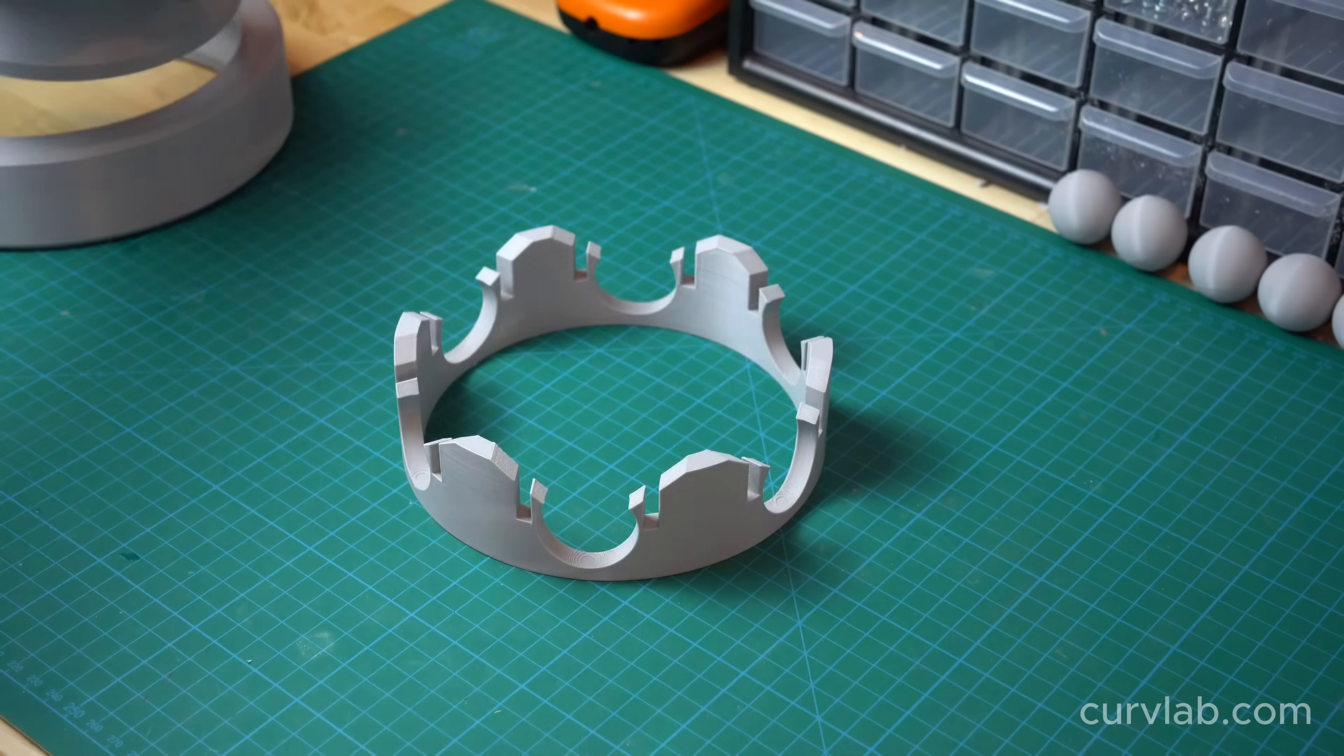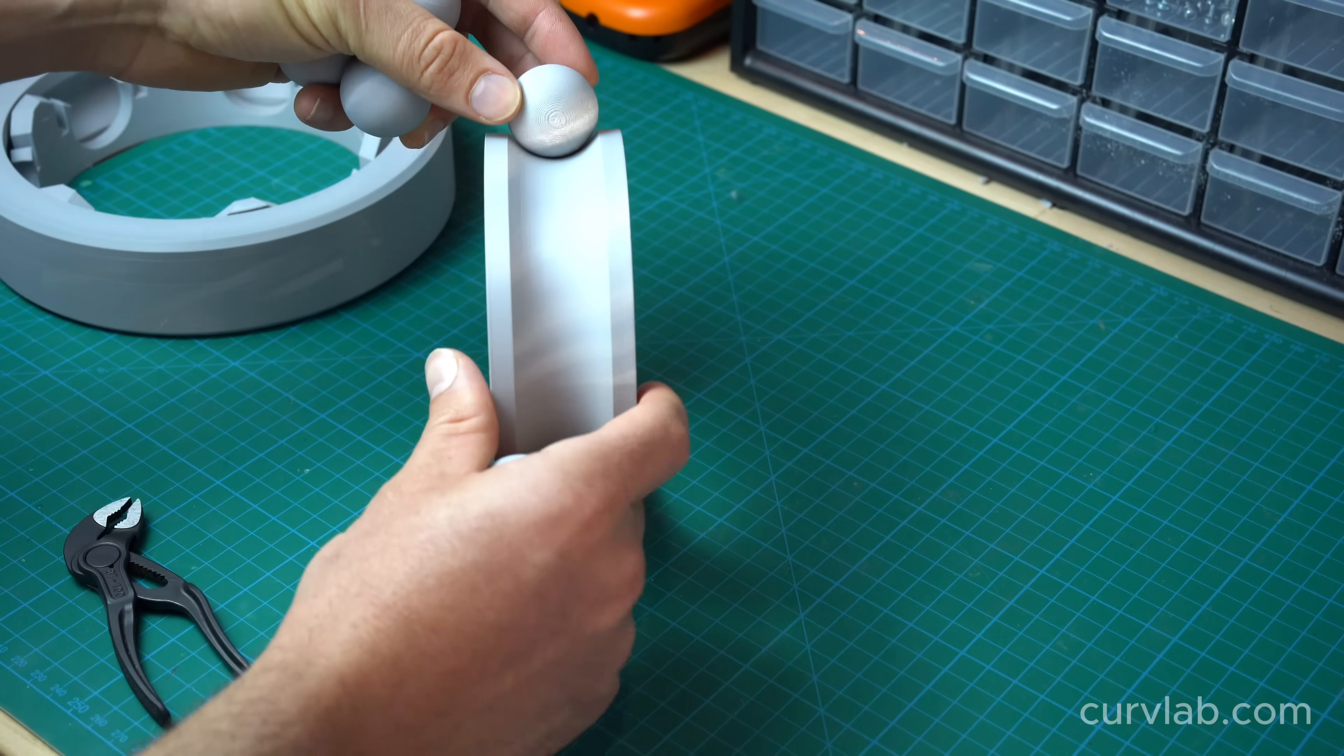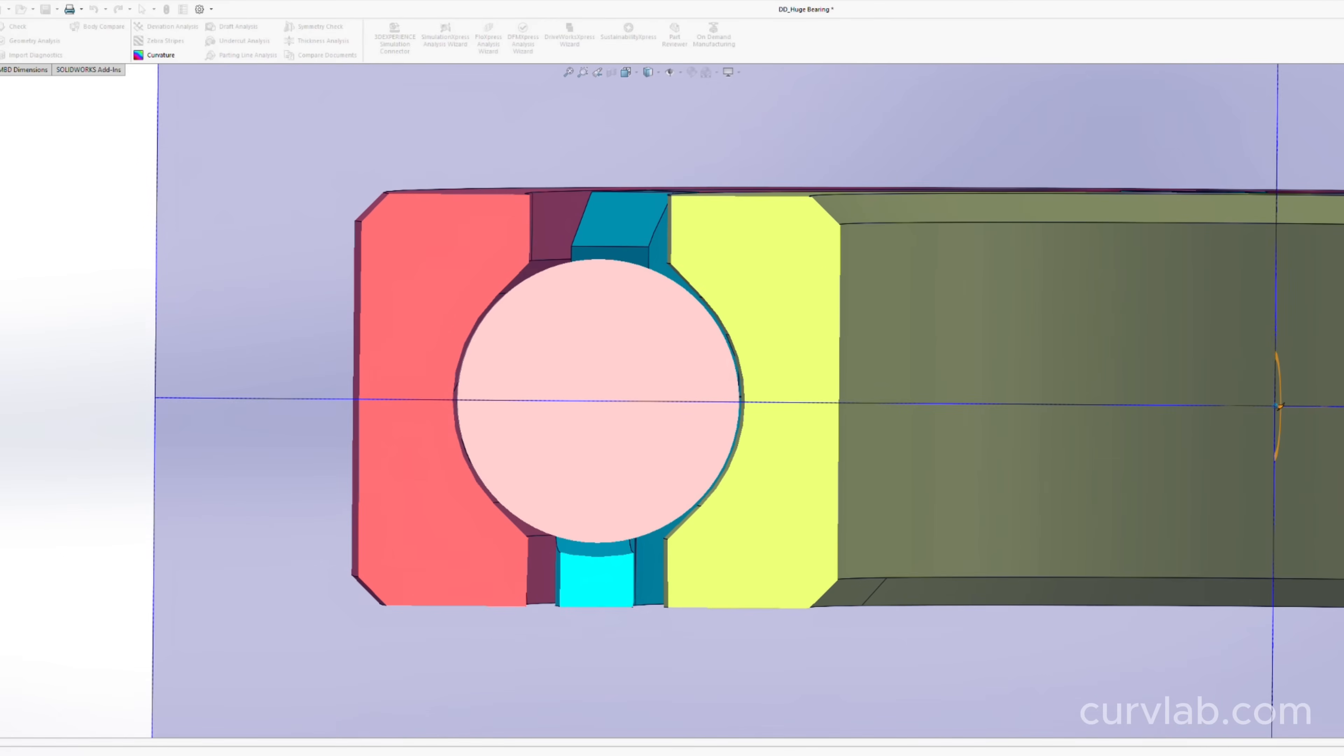The bearings comprise of four main parts. There's the outer race, the inner race, the ball, and then the cage.